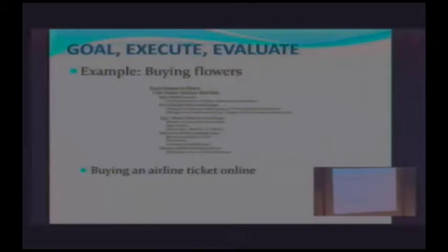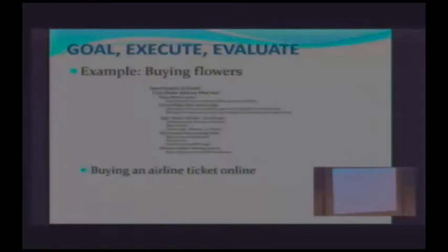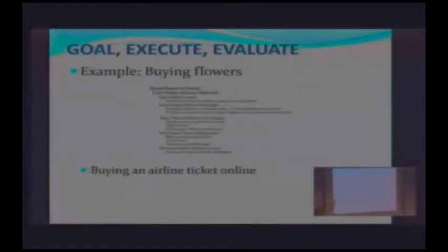We evaluate and repeat. Now we have our list — next, what do we want to do? We select one, we want to visit it. We point, we click, we go visit it. Ultimately we are going to choose a flower delivery service. You have to go decide what flowers you're going to have, enter the address. When are you going to stop? When you have accomplished your goal of sending flowers to a friend — you have ordered it, you've paid for it, you're done. But again, we've gone through that three-step phase.